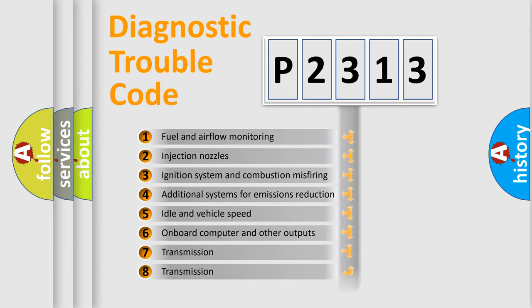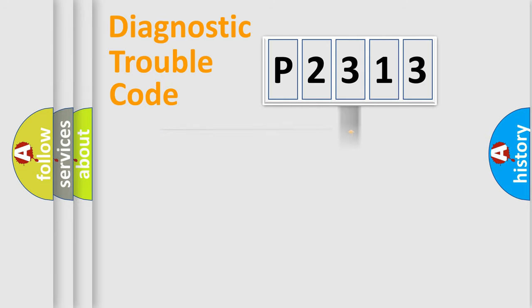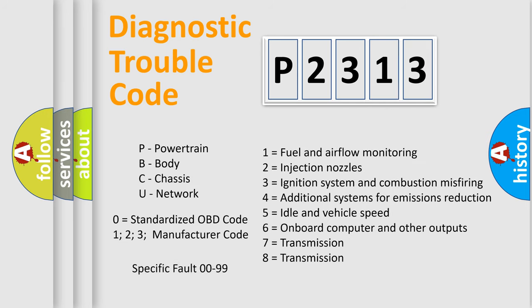The distribution shown is valid only for the standardized DTC code. Only the last two characters define the specific fault of the group. Let's not forget that such a division is valid only if the second character code is expressed by the number zero.